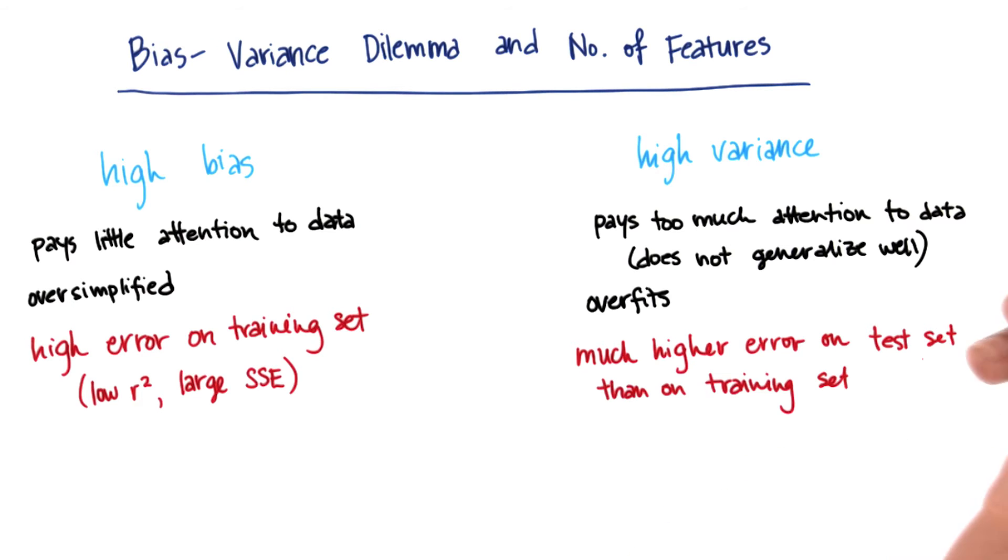As soon as you give it something new, it starts to run into problems right away. You usually expect to do a little bit better on the training set than you do on the test set, but high variance means that you're doing much better on the training set. When you're overfitting to the training set, you get much worse performance on the test set.